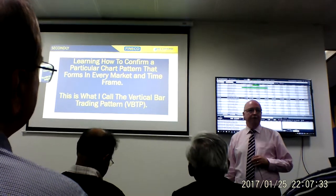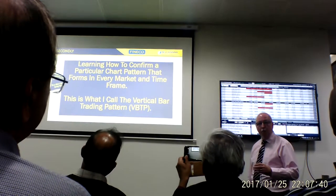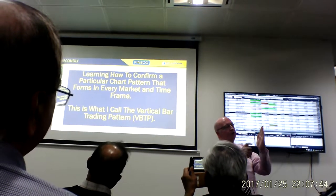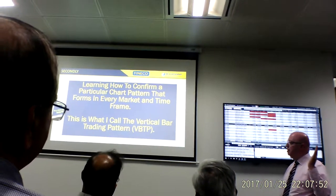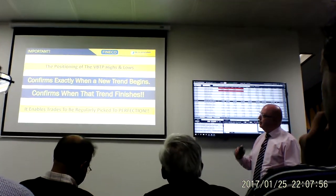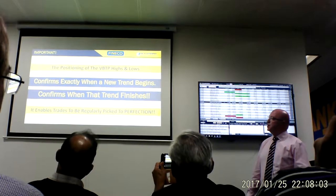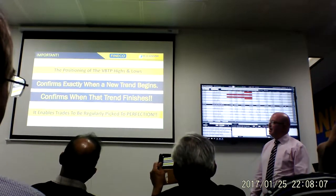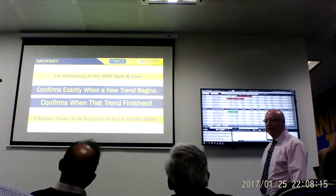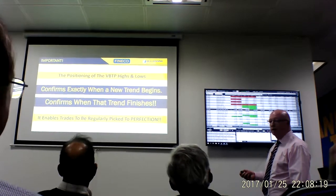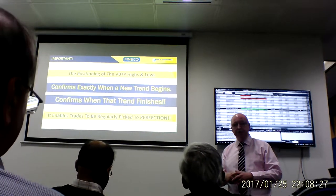Do not be frightened when you see the words 'chart pattern,' because it is not like looking for flag patterns or triangles. What we are looking for — if you hold your right or left hand up to the ceiling — is this middle finger high. If you put it down to the ground, we are looking for this middle finger low. This is what I call the vertical bar trading pattern, and it is the positioning of the vertical bar trading pattern highs and lows that confirms exactly when the new trend begins and when that trend finishes.